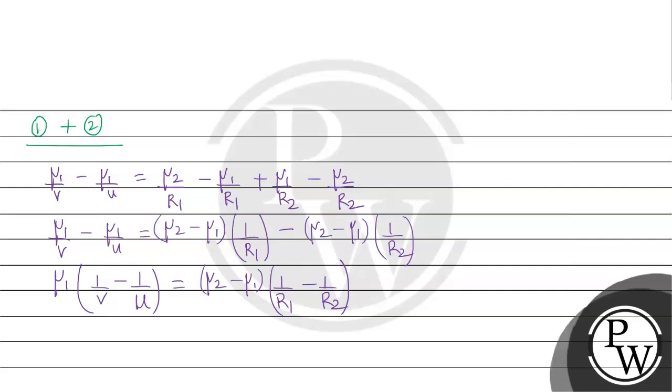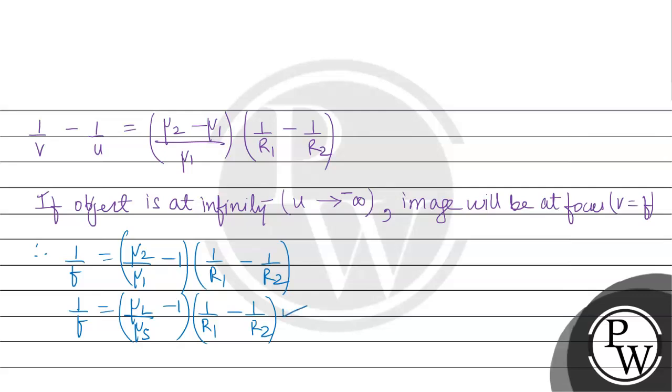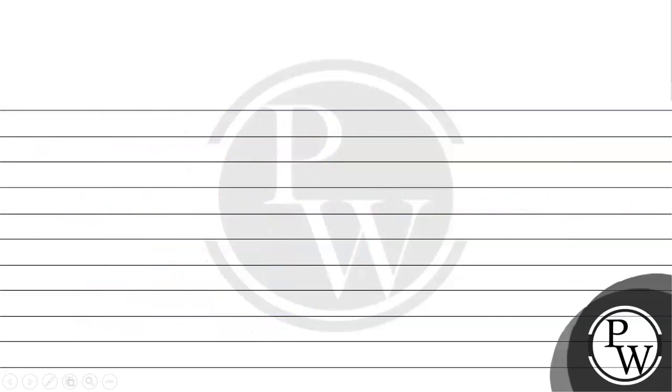Now from equation 3 and equation 4, we can derive that 1/f = 1/v - 1/u. This is the lens formula.